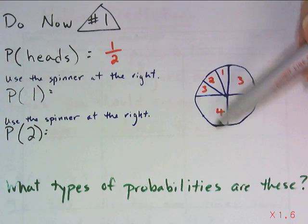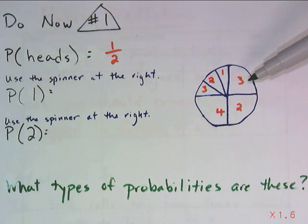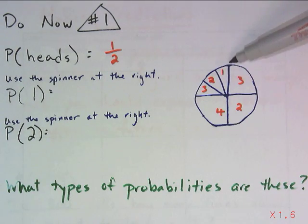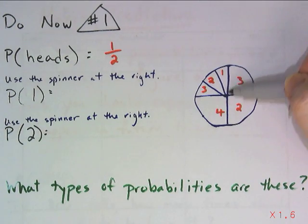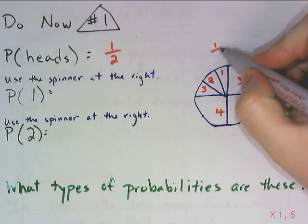When I look at the spinner at the right, it's not going to just be a matter of counting up how many spaces there are because they're not all equal-sized spaces. For the probability of landing on one, I have to land in this section right here,